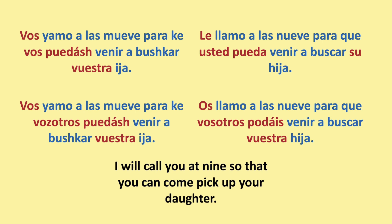For the Ladino vos, which is the formal singular you, you use everything that you would use for vosotros. For example: 'vos llamo a las nueve para que vos puedas venir a buscar vuestra hija.' Whereas in Spanish: 'le llamo a las nueve para que usted pueda venir a buscar su hija.' I will call you at nine so that you can come pick up your daughter. For the plural vosotros, you would use the same verb tenses, possessives, and objects, with all the vosotros forms staying intact, while in Spanish you change everything accordingly.